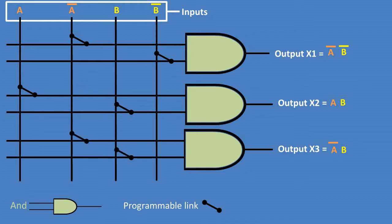And finally, for output X3, we'll need to connect our programmable links to NOT A and B inputs.